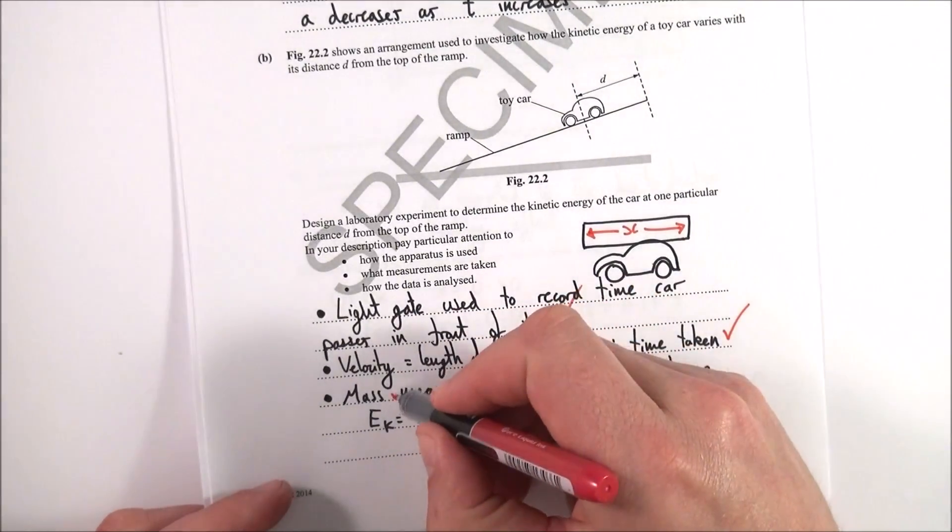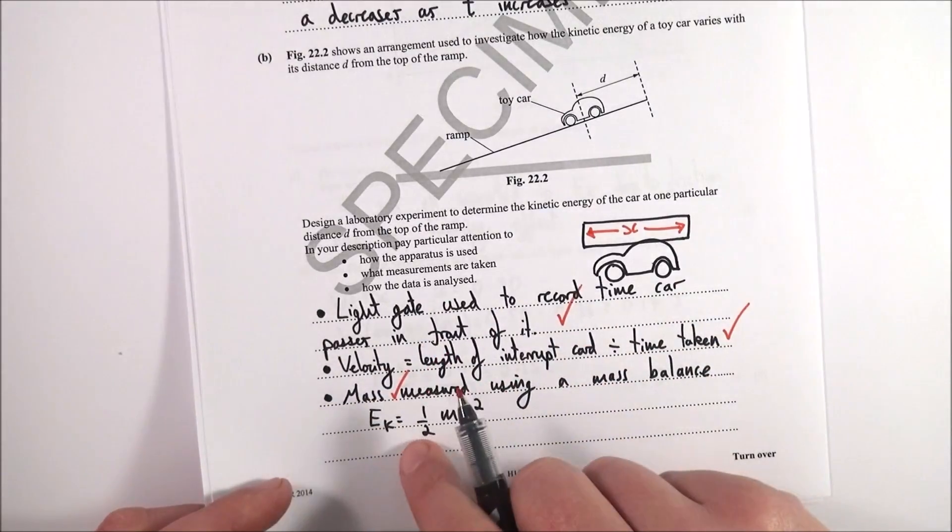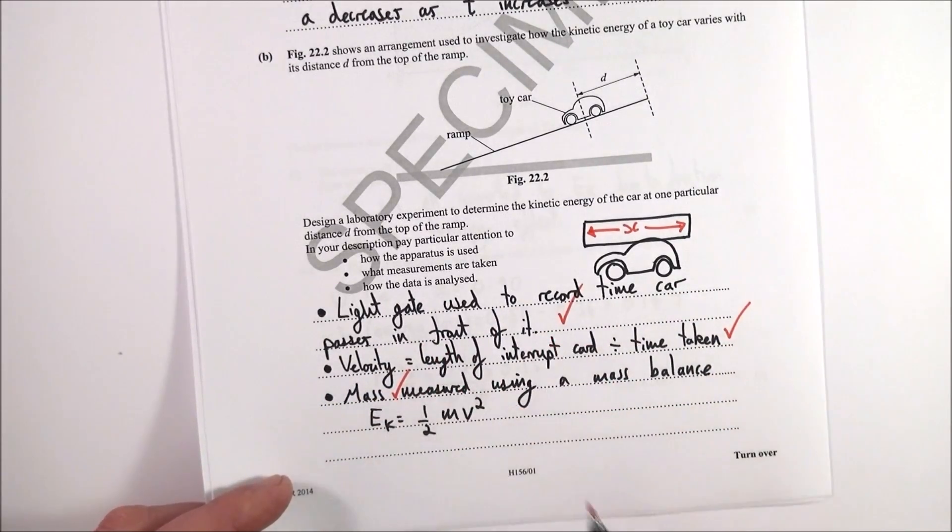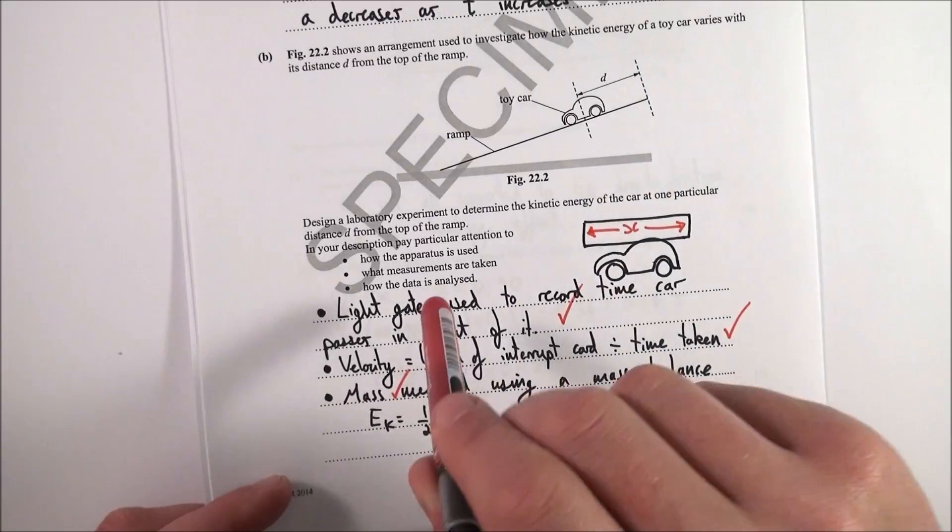And finally, you measure the mass using a mass balance, and then you can work out the kinetic energy from ½ times mass times velocity squared. So I've got details of how you work out the kinetic energy, the fact that you need to know the mass, how you calculate the velocity from the time that a light gate records.